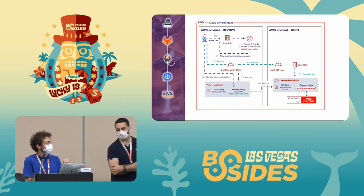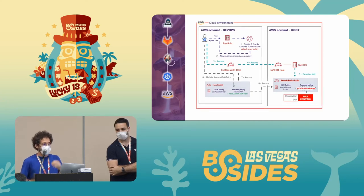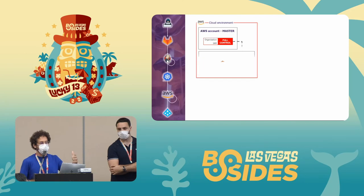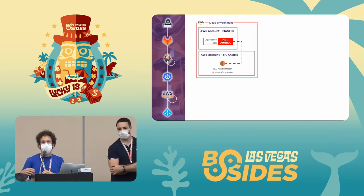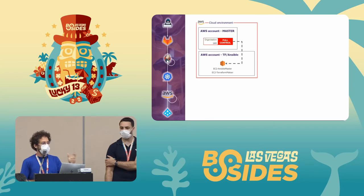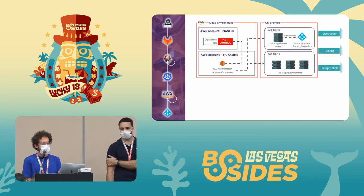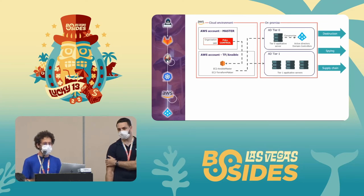With Administrator Access across the entire AWS organization, we could access every account defined in it. To demonstrate impact to our client, we found an AWS account containing all Terraform and Ansible configuration with passwords in clear text — used to pivot back into the on-premise Active Directory and compromise it. This type of scenario shows attackers could deploy ransomware, set up backdoors, or extract sensitive data.